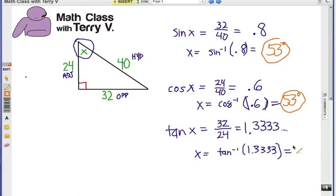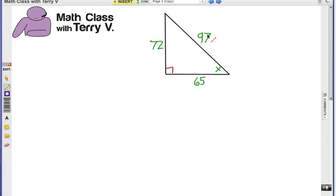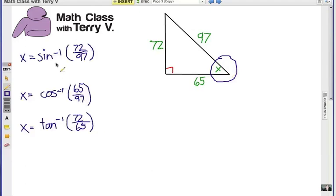Alright, and we have one more example for you to try. Here, the hypotenuse is 97. The legs are 72 and 65, and this is your reference angle. Looking for the measure of that angle. You choose one of the three functions. Do the inverse function to find the missing angle. Alright, notice how I'm writing this. This is just a shortcut. The missing angle x is the inverse sine of opposite over hypotenuse, or the inverse cosine of adjacent over hypotenuse, or the inverse tangent of the opposite over adjacent. Alright, we should get the same answer. Give it a try. Answer, 47.9 degrees. Round it to the nearest tenth of a degree.